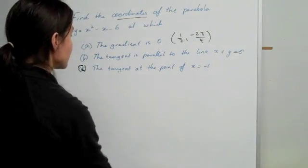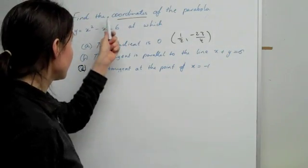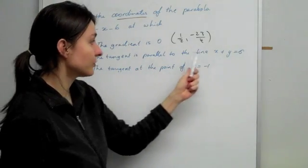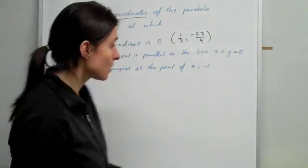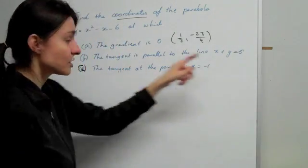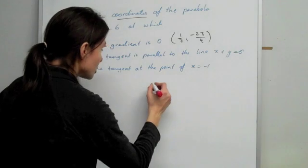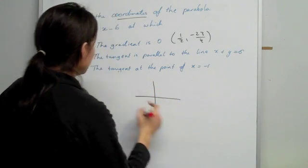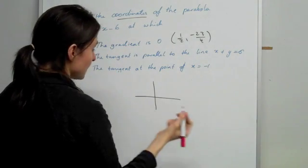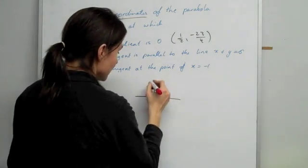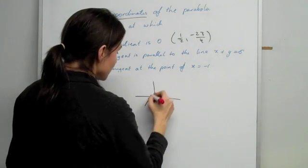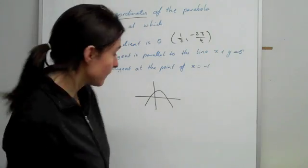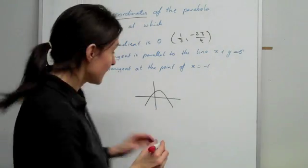The next question says find the coordinates of the parabola at which the tangent is parallel to the line here. So they've given you a line and they're telling you that the tangent is parallel to it. So I'll just show you basically what we are given. Whatever parabola this is, I haven't sketched this in advance, so I'm just going to make a completely different question up. Just going to show you a parabola.